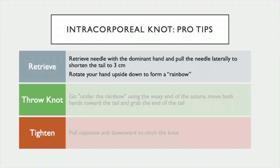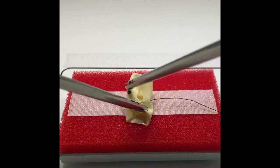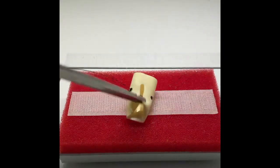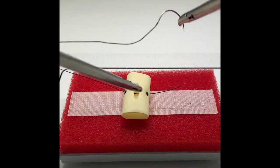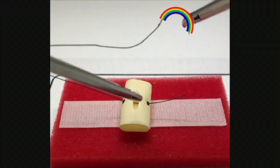Retrieval is different for intracorporeal knots. In task 5, retrieve the needle with your dominant hand and pull laterally to shorten the tail to 3 centimeters. Bring the needle to the same side of the penrose that you sutured on, and rotate the driver upside-down to form a rainbow orientation.